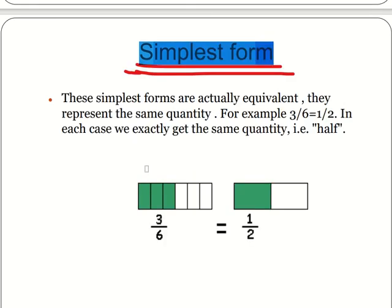These simplest forms are actually equivalent. They represent the same quantity. For example, 3 by 6 is equal to 1 by 2. In each case, we exactly get the same quantity, that is half. As you can see, 3 by 6 is 1 by 2 because 3 ones are 3 and 3 twos are 6. That is why we write this as 1 by 2.